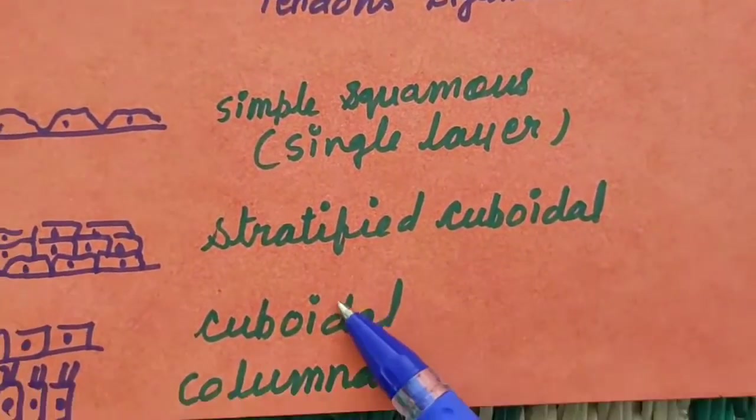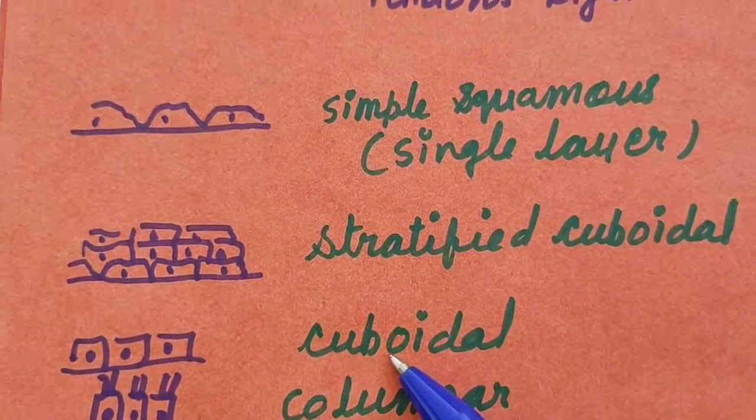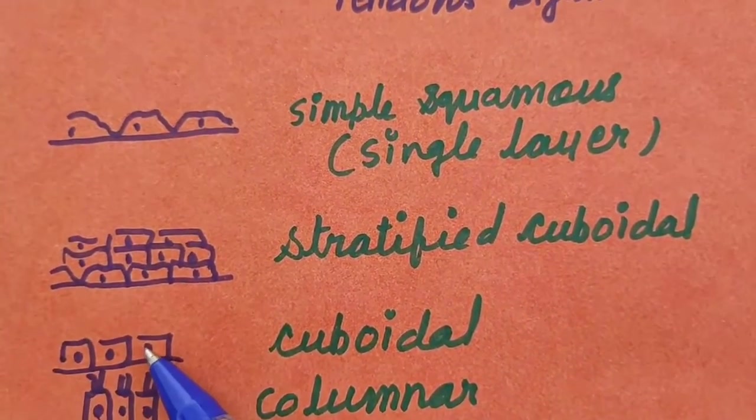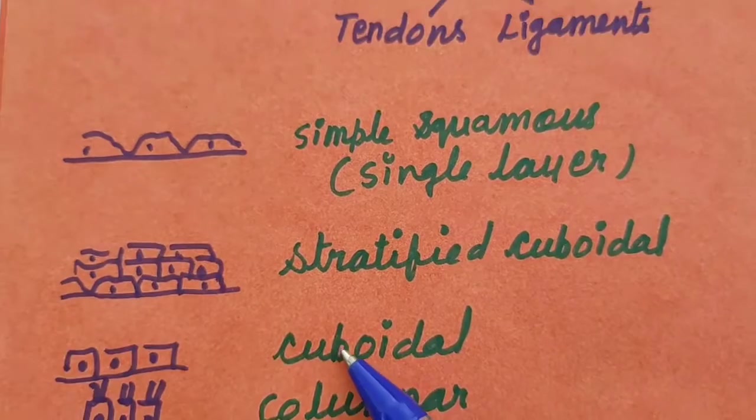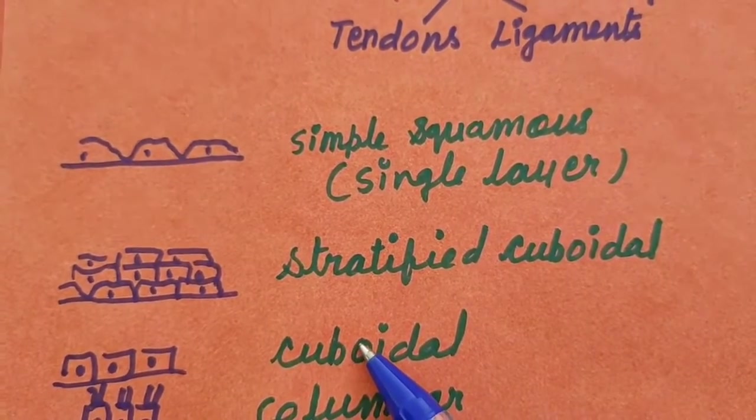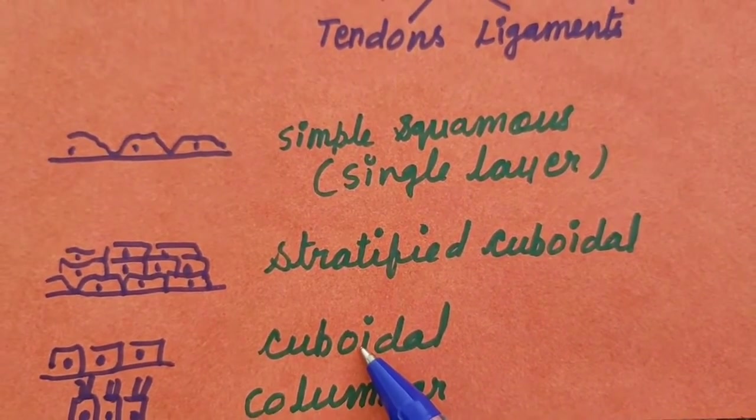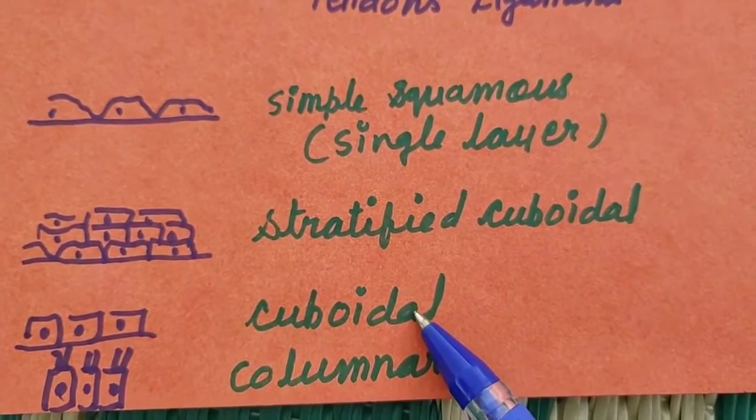Then, cuboidal. They are found single layer again, and found in some parts of kidney tubules and in some glandular ducts like salivary glands.